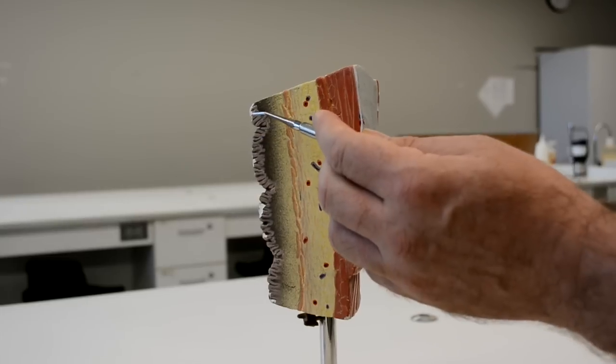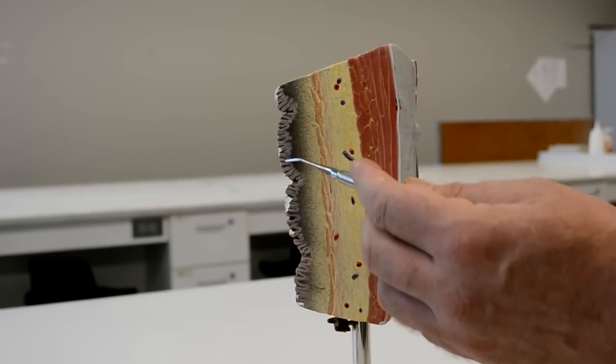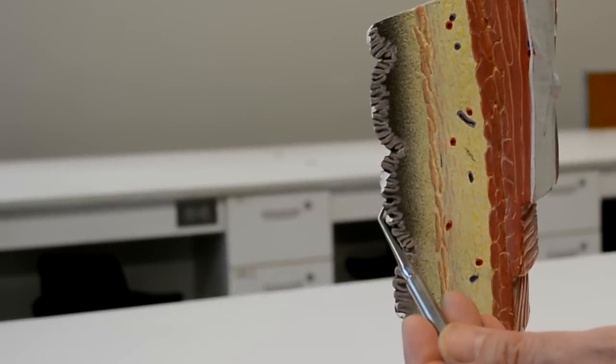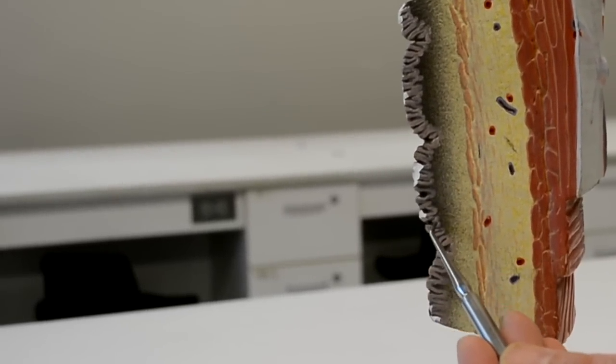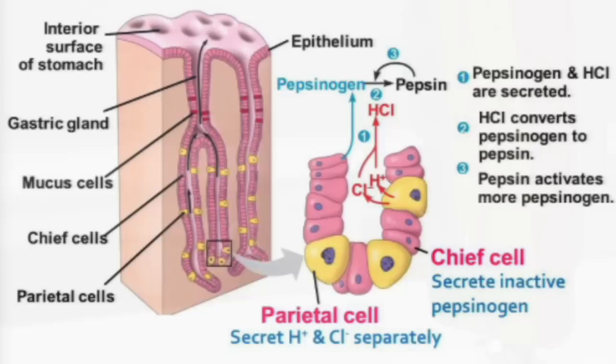In the stomach, in the mucosa, we can see we have gastric pits. There are different types of cells here. The parietal cells secrete hydrochloric acid, and the chief cells secrete pepsinogen.